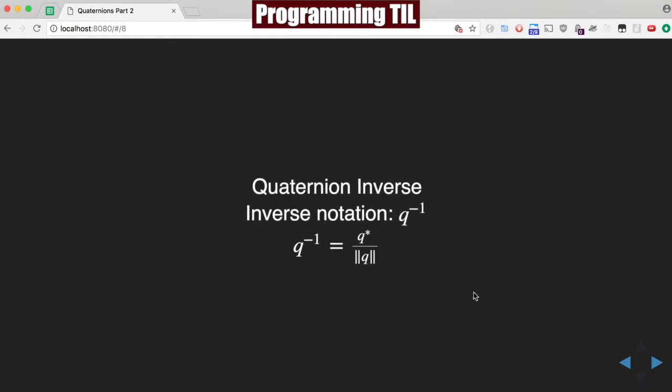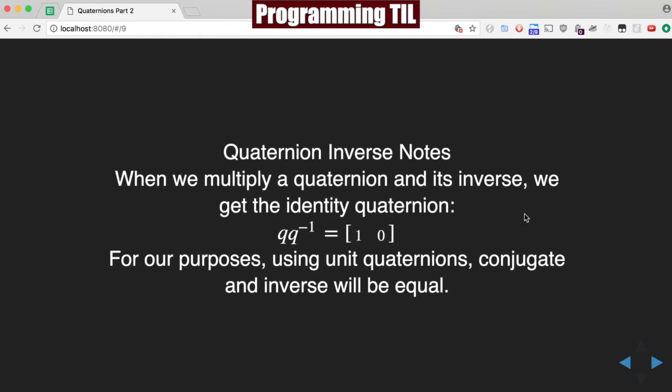The inverse, q to the negative 1, is the conjugate over the magnitude. And when we multiply a quaternion and its inverse, we get the identity quaternion. So q times q to the negative 1, q times q inverse, is equal to [1, 0, 0, 0]. For our purposes, we're going to be using unit quaternions, and conjugate and the inverse will be equal because of that.